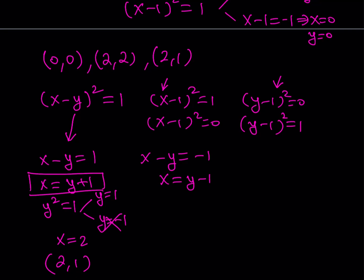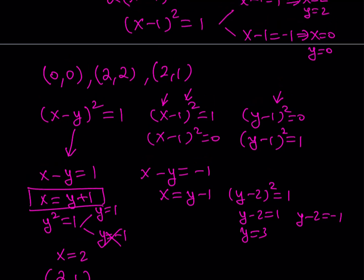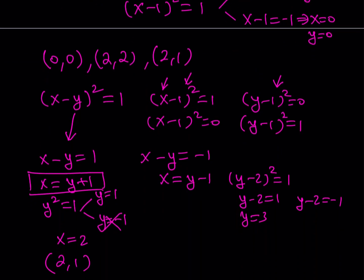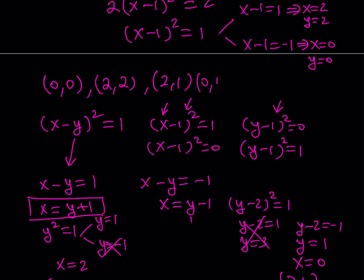For the case x minus y equals negative 1, meaning x equals y minus 1, substituting gives y minus 2 squared equals 1. So y minus 2 equals 1 or y minus 2 equals negative 1, giving y equals 3 or y equals 1. y equals 3 is not acceptable because that gives 2 squared which is 4 — too large. y equals 1 works, giving x equals 0. So 0 comma 1 is another solution.